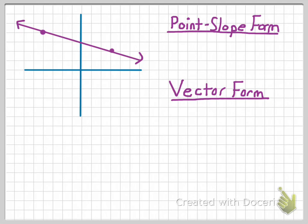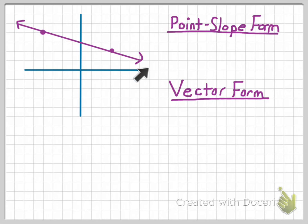Whenever you're trying to write the point-slope form or slope-intercept form of a line, there are two things you have to know. You have to know what a point on the line is — in this case I know two of them. And you also have to know the direction of the line, which we call the slope. The slope is also the direction, and I'm going to be using that word 'direction' quite a lot when referring to the vector form of a linear equation.